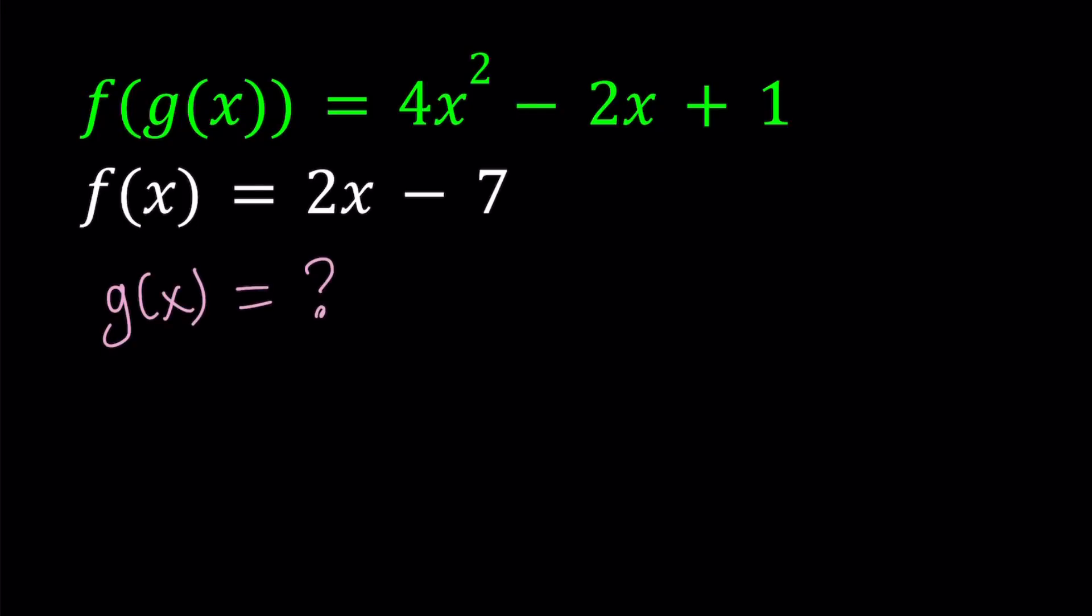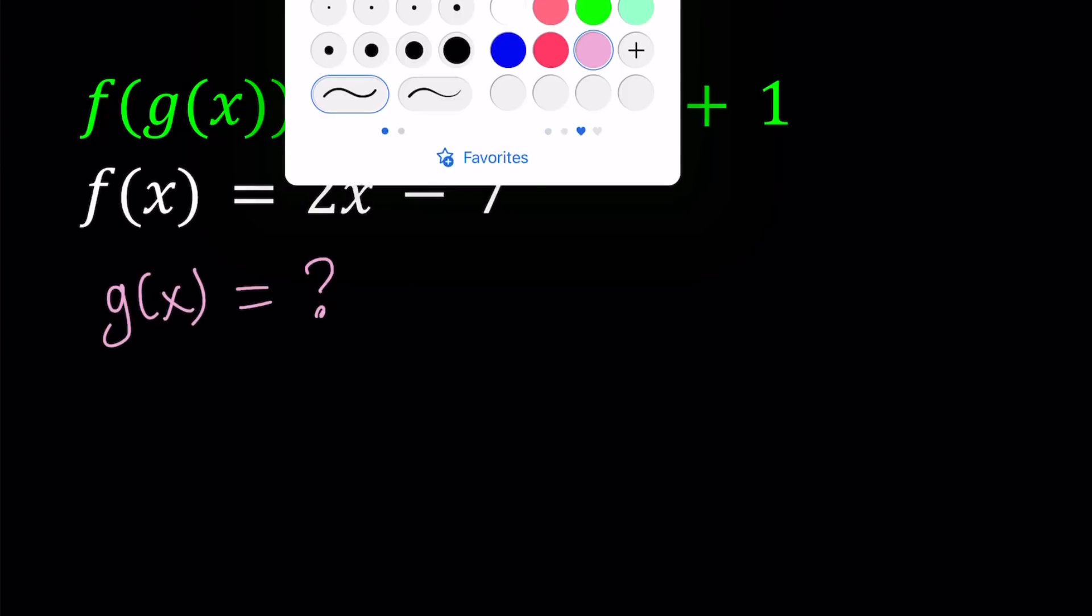The only unknown pretty much. Now we've done a similar problem before, but at that time f of g of x and g of x were given. Obviously this is a whole different problem, and I'm going to be presenting two methods. Let's start with the first method.